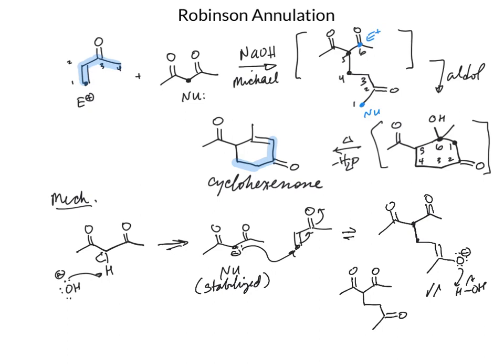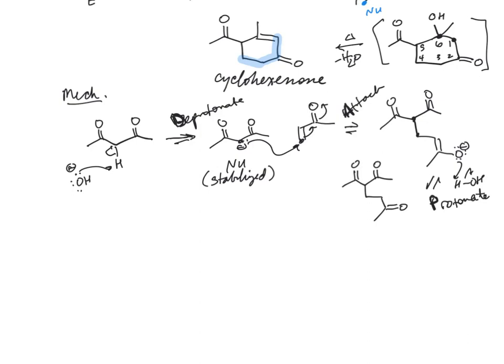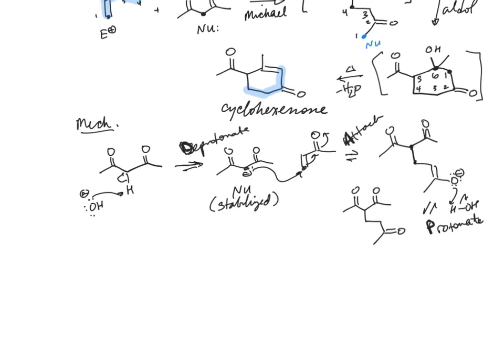So this is a pattern that we see a lot of times: deprotonate, attack, and then protonate. That pattern is very common for base-catalyzed reactions — deprotonate, attack, and protonate. And now we're going to do the aldol reaction, because now we have potential for an intramolecular aldol where we have an alpha-carbon that is appropriately situated from a carbonyl.